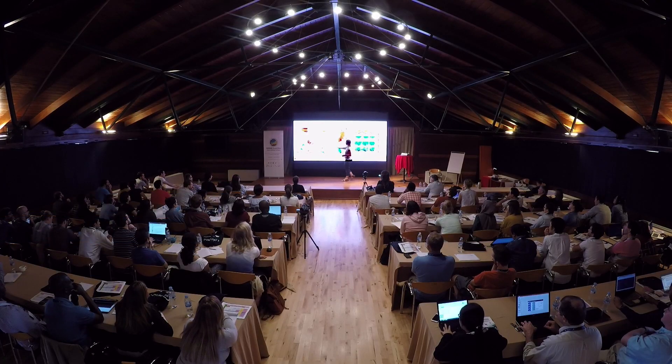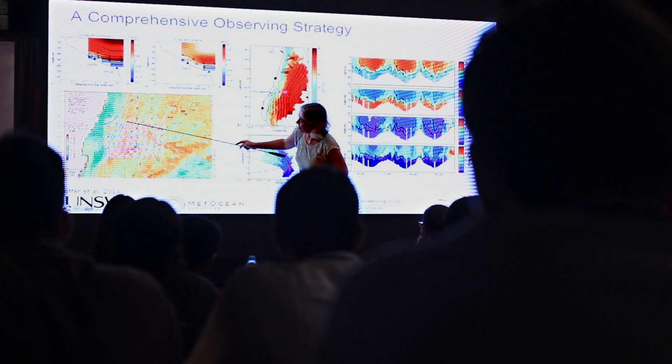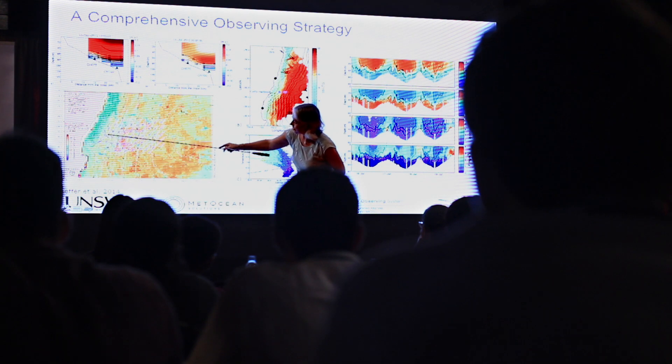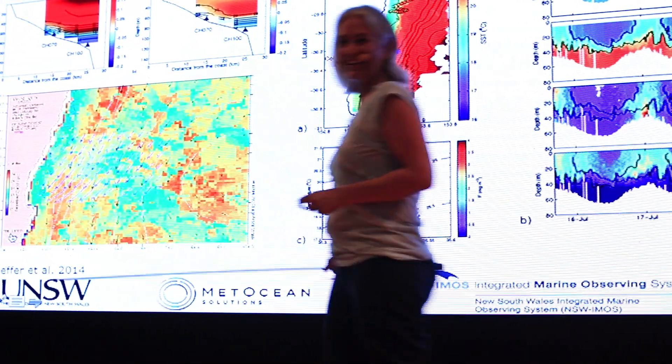So it's a map of sea surface temperature, our HF radar velocities, and somewhere in there I think there's a glider coming through — oh, and off it goes.